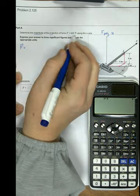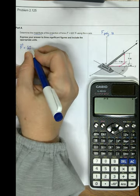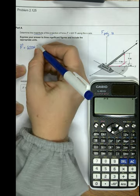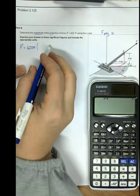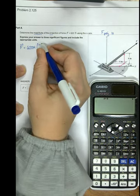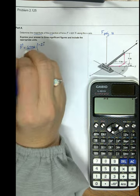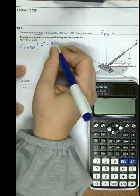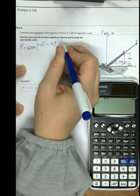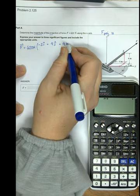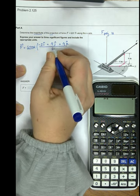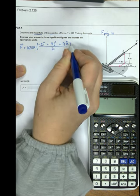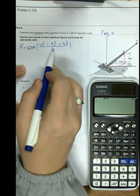First, force in vector form will equal the magnitude times the unit vector. The unit vector can be based on the position vector, so we have minus 2i plus 4j plus 4k.